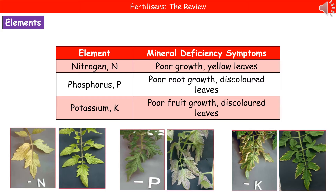So make sure you remember that nitrogen gives yellow leaves. Phosphorus and potassium are both associated with discolored leaves. The other distinction is the type of growth affected: general growth with nitrogen, roots with phosphorus, and fruits with potassium.